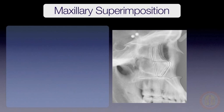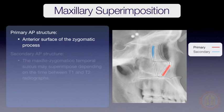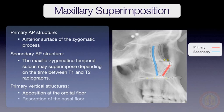Once you've completed the tracings, you can superimpose them based on the primary and secondary reference structures. The primary structure used to superimpose tracings in the AP plane is the anterior surface of the zygomatic process. If there's any doubt about your tracing or the process cannot be easily identified, then superimpose on the maxillozygomatico sulcus. The primary structures to determine the vertical position of the superimposition are the orbital floor, where bony apposition occurs during growth, and the nasal floor, which resorbs.